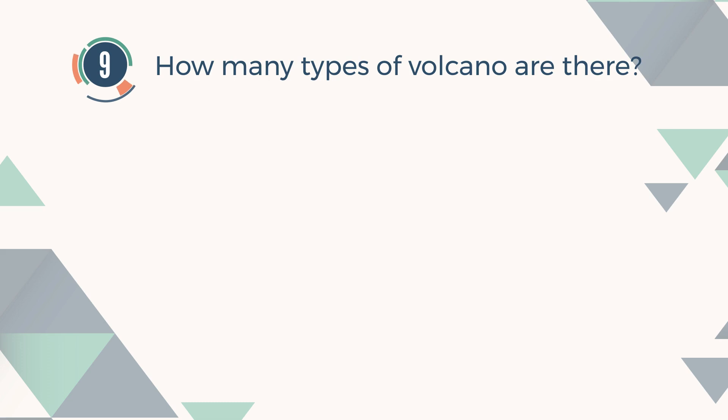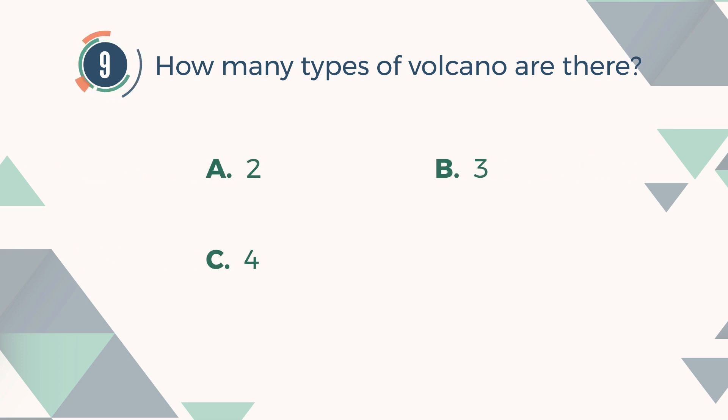Number 9. How many types of volcano are there? A. 2. B. 3. C. 4. D. 5.